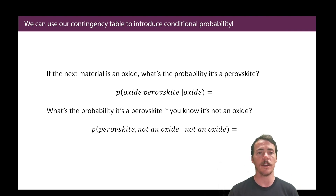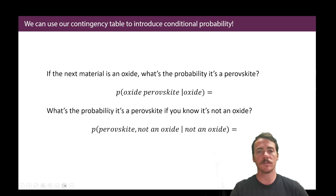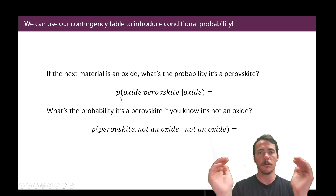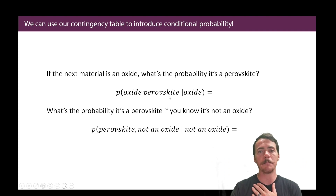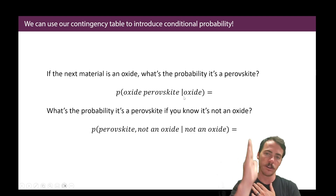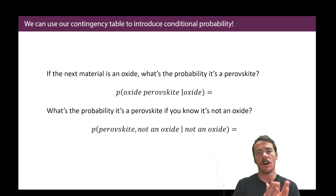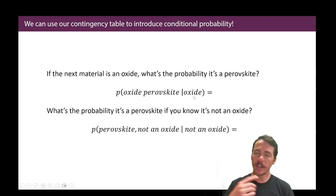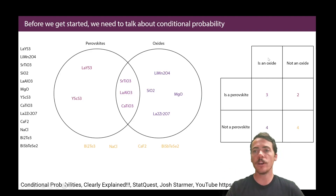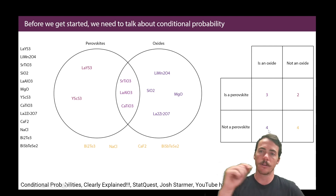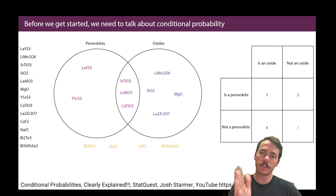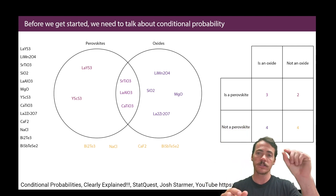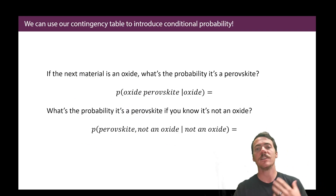Now we're going to modify that to do conditional probability using our contingency table. A conditional probability is the probability of something with some condition attached to it. The notation P(oxide perovskite | oxide) means: what's the probability of it being an oxide perovskite given that we already know it's an oxide? That changes the math. If we know it's an oxide, there were seven of those — so what's the odds of it being a perovskite? Three out of seven, instead of three out of 13, because now we know something. We have a condition. That is a conditional probability.